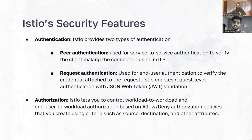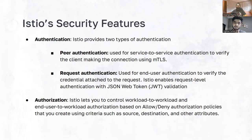By default, the action is allow. So whenever we create an authorization policy in our mesh without specifying an action, it gets created with the allow action. It is recommended to start with a deny-all policy in your cluster and then start creating allow policies for requests coming from outside your cluster, outside your mesh, or traffic coming from the same mesh. You can use authorization policies in a multi-cluster setup as well, because Istio works very well with multiple cluster configurations.